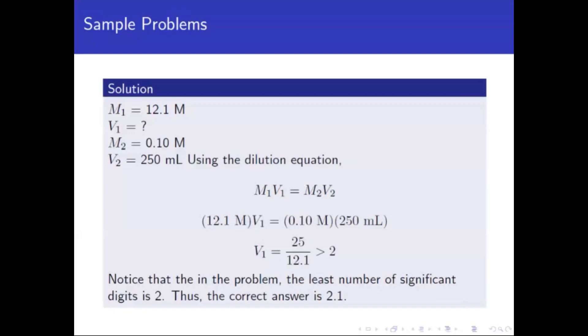So this is a dilution equation. The original is the 12.1 concentrated hydrochloric acid. What volume V1 would you take from 12.1 molar HCl to produce a solution that is 250 mL and the concentration is 0.10 molar? So that's M2 and V2 respectively.